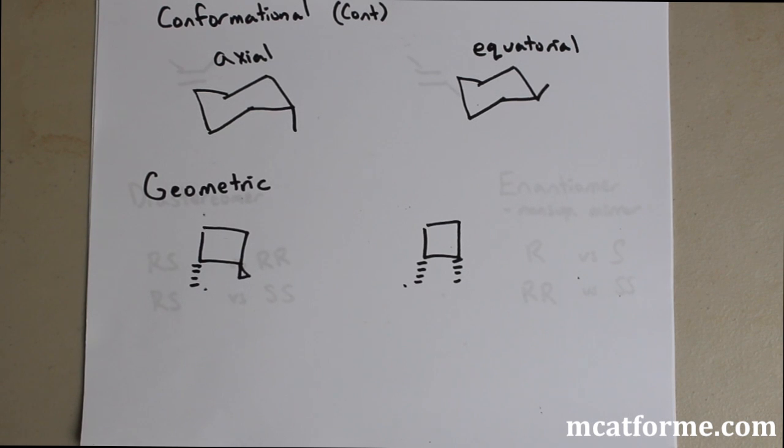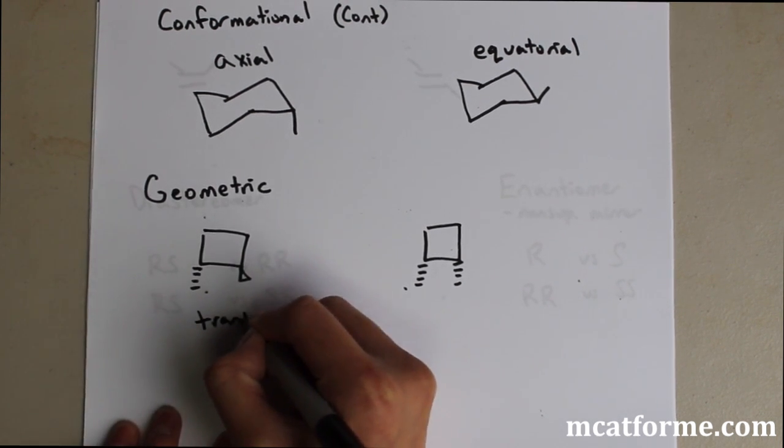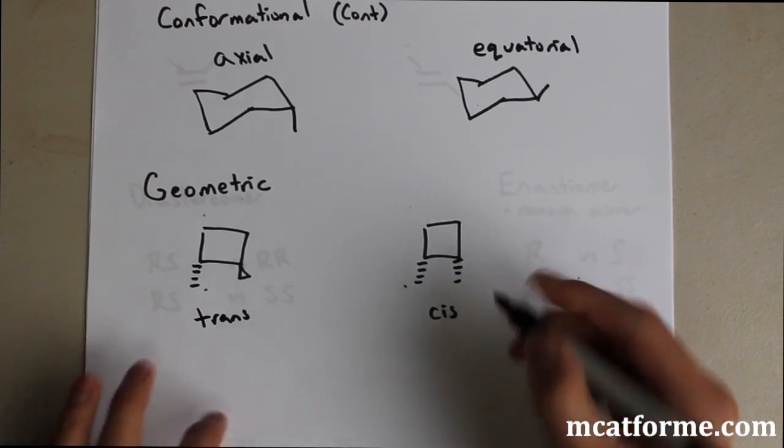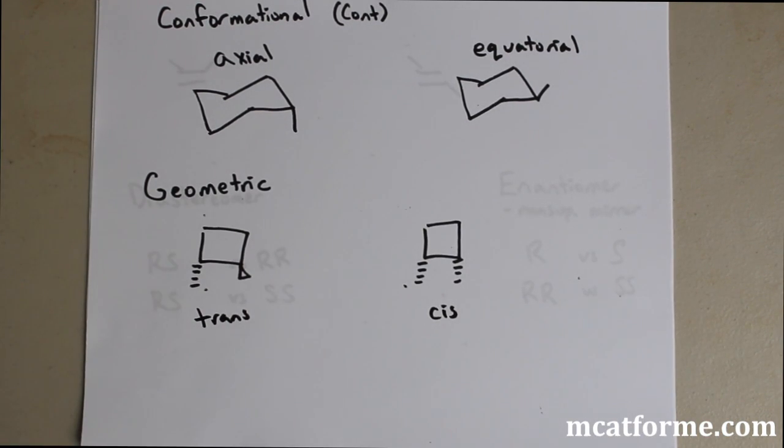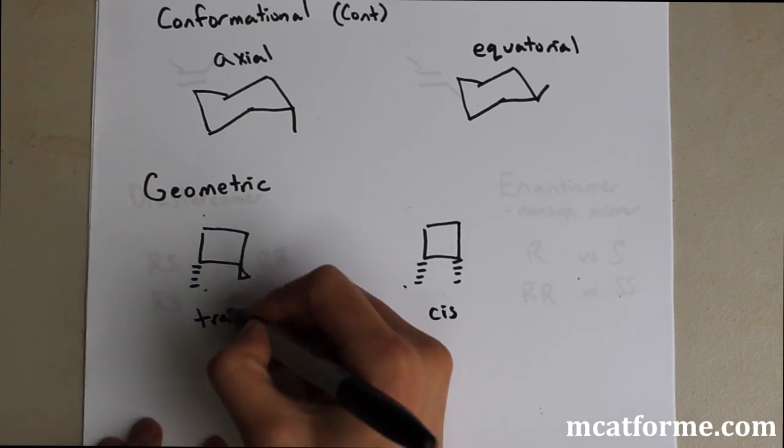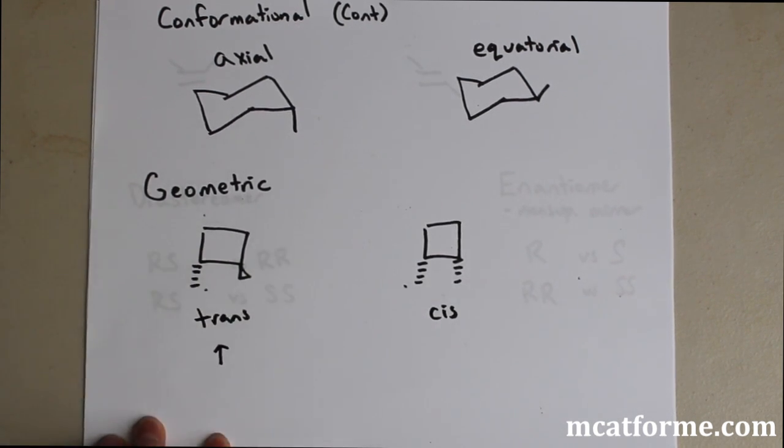So now we're going to be looking at geometric isomers. And geometric isomers include cis versus trans and E versus Z. So the first thing we're going to show is cis versus trans. So in this case, we have on the left, we have a trans molecule. And on the right, we have cis. So trans pointing opposite from each other, cis pointing in the same direction. And just to let you know, trans is going to be more stable.